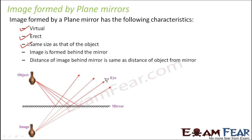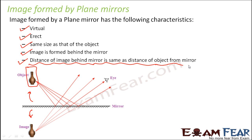In a plane mirror, the image will always be of the same size as the object. The image is formed behind the mirror — the object is always in front, but the image is always formed on the other side. An important point is that the distance of the image behind the mirror is the same as the distance of the object from the mirror, so O is always equal to I.